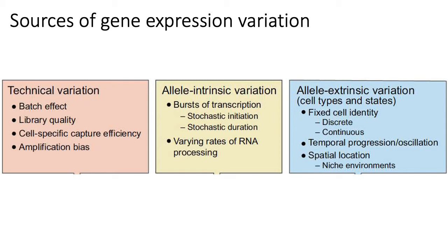What's listed under allele intrinsic variation basically refers to transcriptional bursting. There's a lot of stochasticity in gene expression that can now be observed in single cell RNA-seq data. For example, transcription for even constitutively expressed genes isn't really a constant process — there's oftentimes bursting of transcription followed by pauses of transcription. Similarly, mRNA processing and maturation is a stochastic process, which gives variation in what you measure with single cell RNA-seq, because it essentially measures instantaneous snapshots of gene expression patterns.